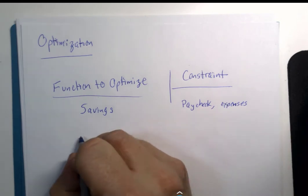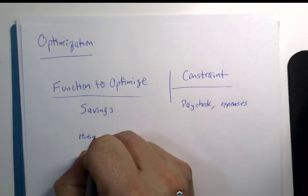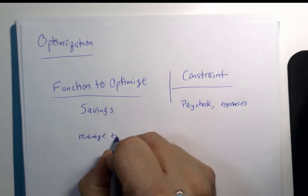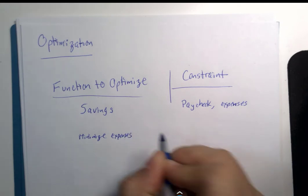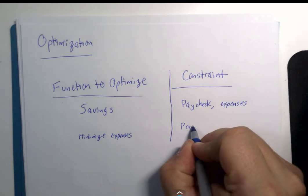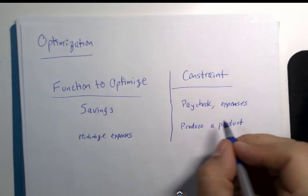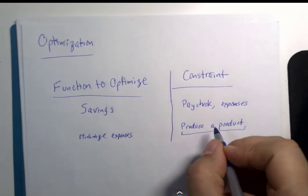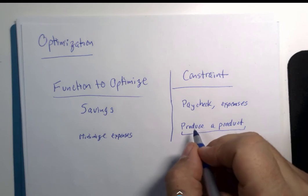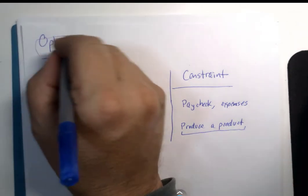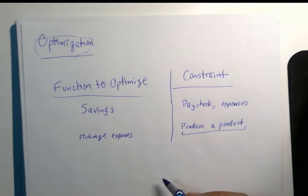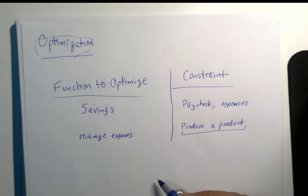Suppose you're trying to minimize expenses in a business. What are the constraints? Well, you still have to produce a product, and there are conditions that come along with producing it. There are quite a number of ways to study the general topic of optimization. In my own education, this topic came up in multiple different disciplines, and calculus was often involved, but not only involved. There were other ways of looking at certain problems.